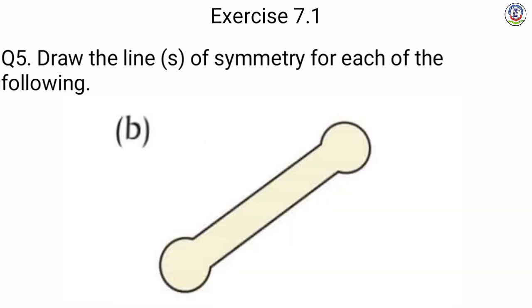Next is B — we have a figure. वो figure दो equal parts में cut होना है, और वो slanting line of symmetry से cut हो रहा है.